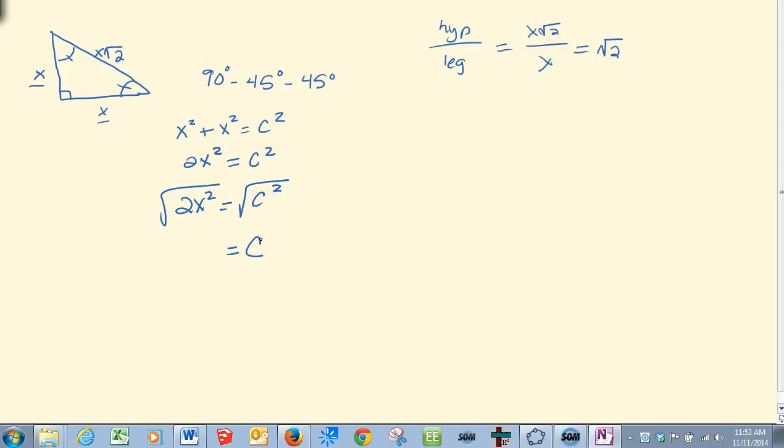c squared's square root is c. I can break this radical apart where I can simplify just one. So c then will always be a leg multiplied by the square root of two. It's a very reliable ratio.